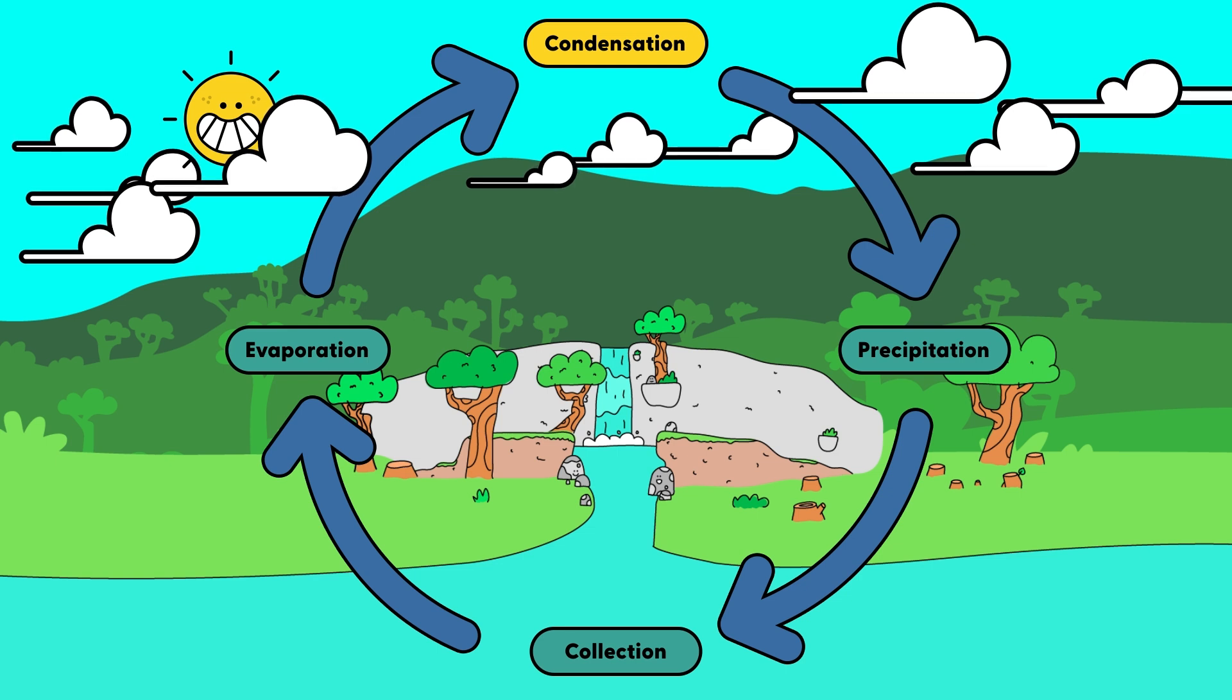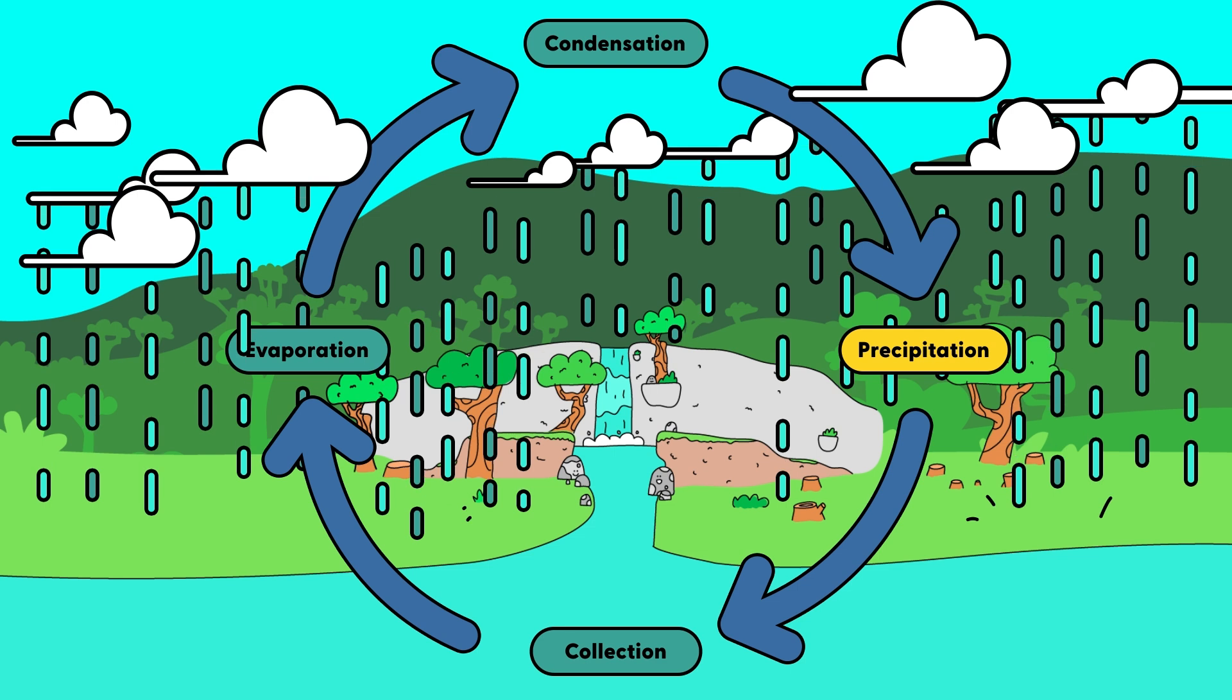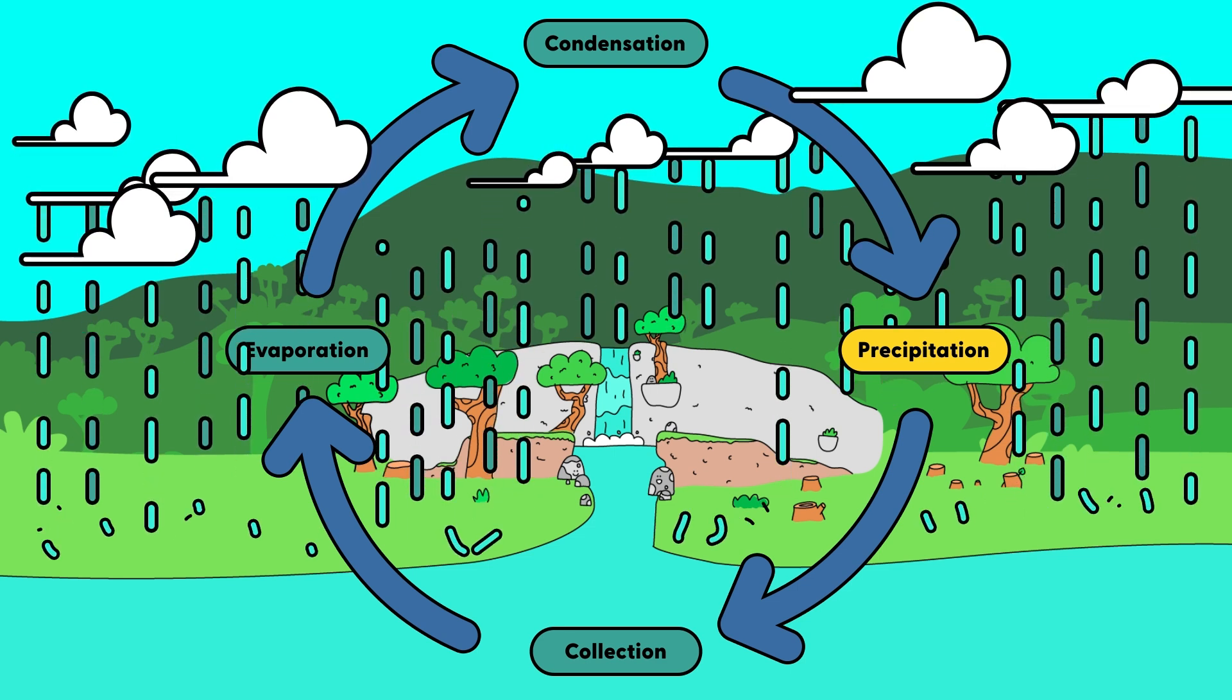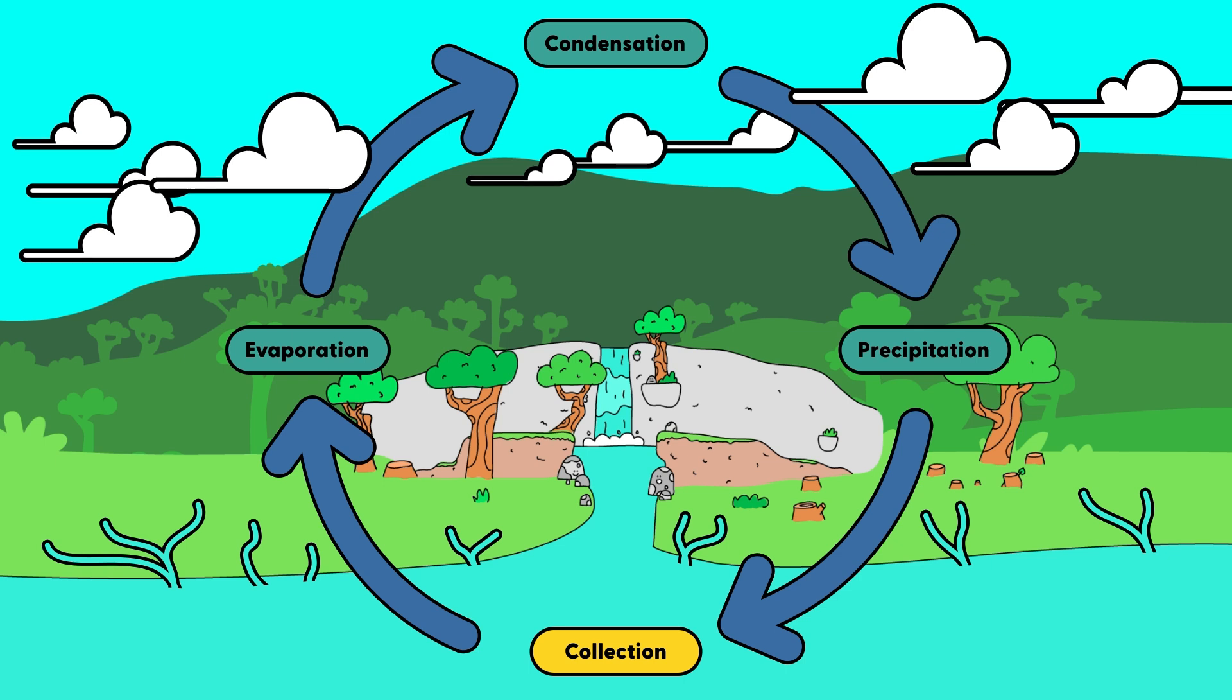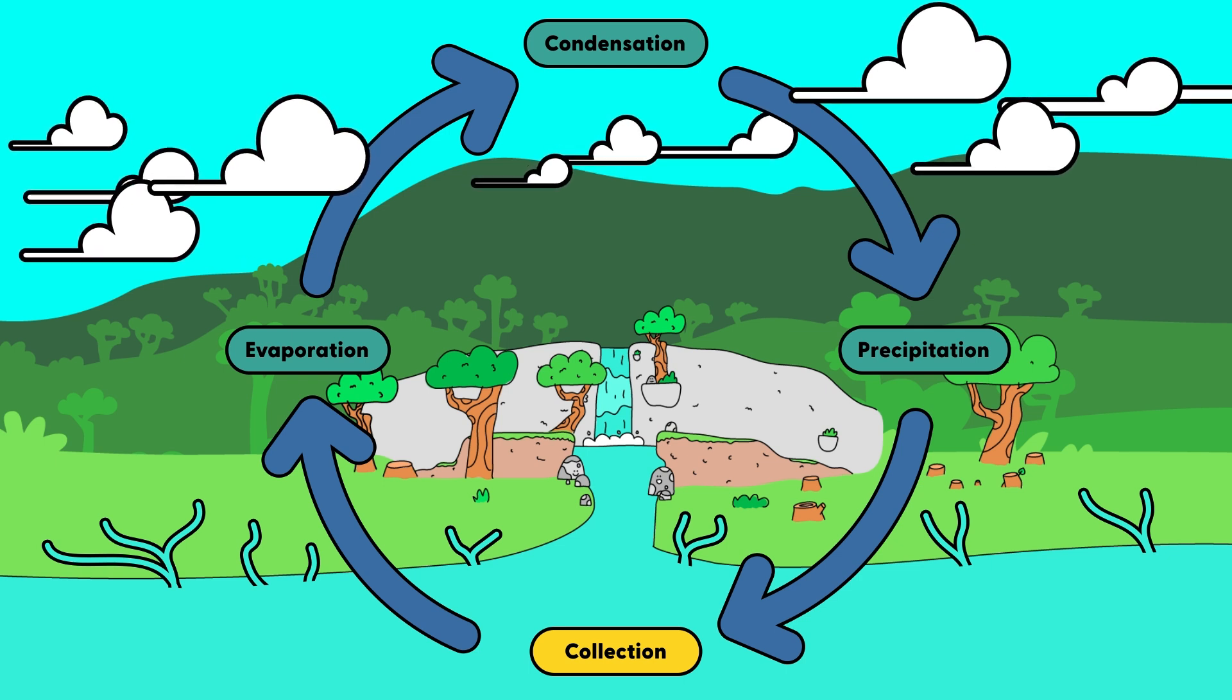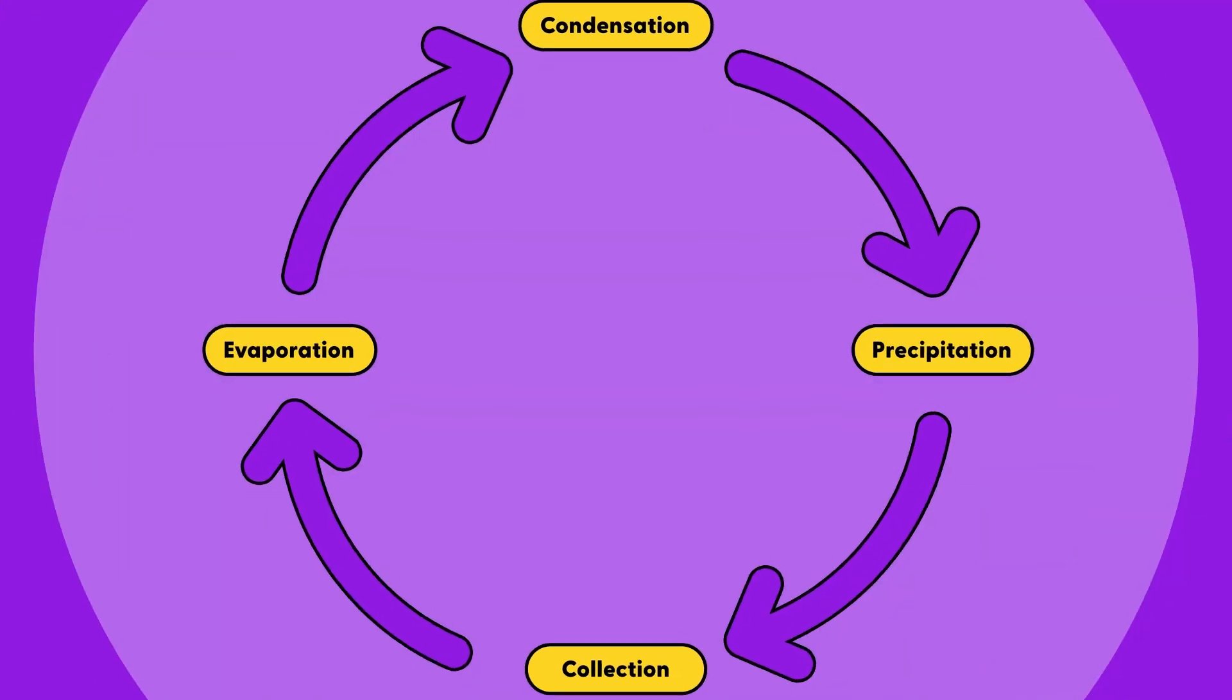When the clouds get heavy, they release the water droplets, which fall back to the ground where it seeps into the soil, fills up rivers and lakes, and even travels deep into underground reservoirs, replenishing water sources for humans, animals and plants all over the world! Yippee! We call this the water cycle!